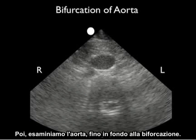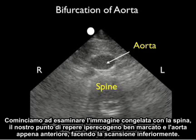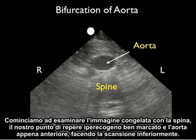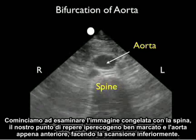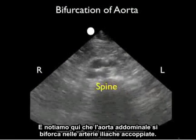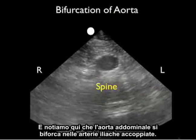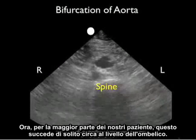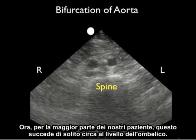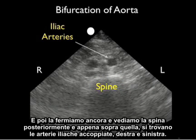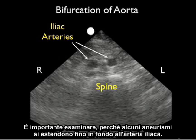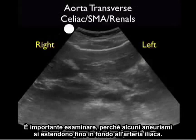Next we'll look at the aorta all the way down to bifurcation. We'll begin with the spine, our very pronounced hyperechoic landmark, and the aorta just anterior, scanning inferiorly. We'll notice that the abdominal aorta branches into the paired iliac arteries, which usually occurs at about the level of the umbilicus in most patients. Here I'll freeze it — we see the spine posteriorly, and just on top of that, the paired iliac arteries, right and left. It's important to look at that, as some aneurysms will extend all the way down into the iliac artery.